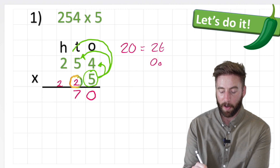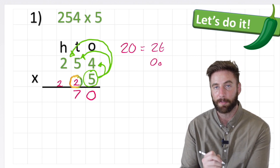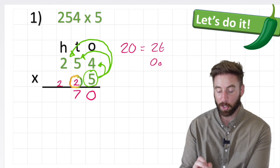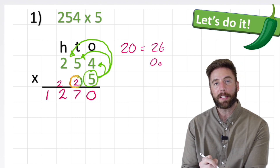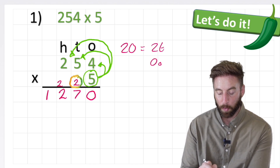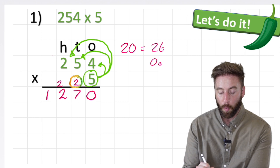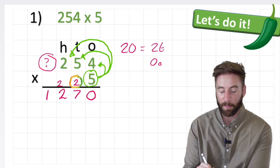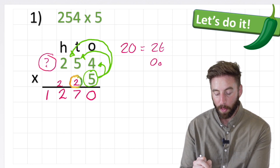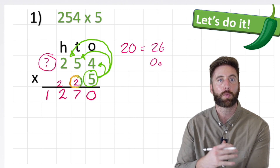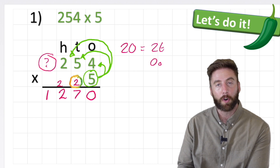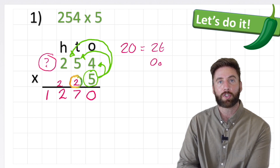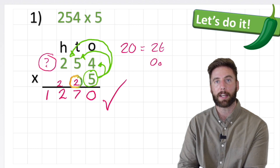My hundreds question is 5 times 2, and 5 times 2 is 10, plus my 2 equals 12. Now in this case, we've moved into our second column again with 12, but there is nowhere else in my question left to go. So I can leave my 1 in the thousands column because we have nothing else to work out there. So my answer to 254 times 5 equals 1,270. Give myself a nice big tick.